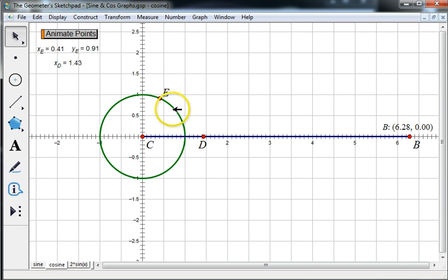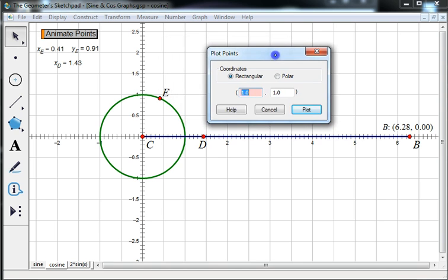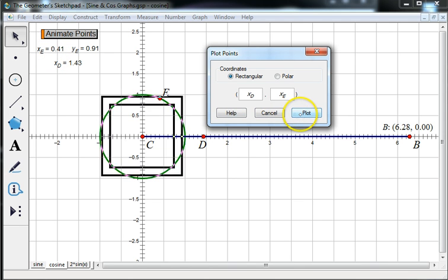So over here, what I'm going to do is I'm going to take the x-coordinate of e, which is the value of the cosine. And I'm going to trace it. That's going to be the y-value of my tracing point. And my x-coordinate is going to match point d down here. So I'm going to go to graph, plot points. And remember, I want the x-coordinate to match my d. And I want the y-coordinate to be my cosine value, which is the x-coordinate of point e. Hit plot.